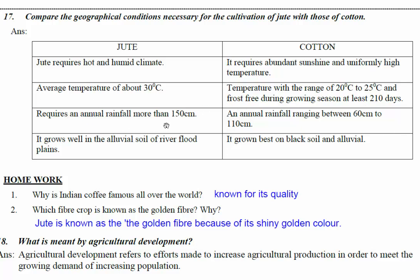Annual rainfall for jute is 150 centimeters, and for cotton 60 to 110 centimeters. Jute grows well in the alluvial soil of river flood plains, especially the Ganga-Brahmaputra Delta, while cotton grows well on black soil and alluvial soil — also known as black cotton soil.